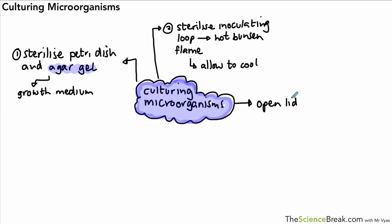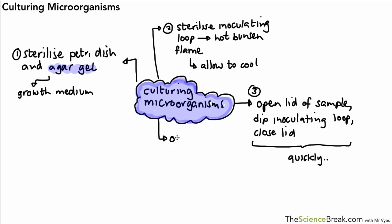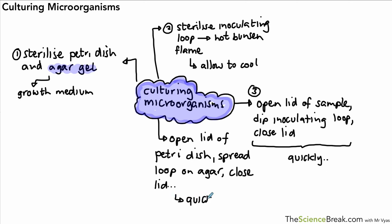Once we've done that, we open the lid of our sample bottle. That was our culture broth. We dip in the loop, the end of the loop and close the lid. That step has to be done as quickly as possible. Then we go on to the next step. We open the lid of our petri dish where we want to grow the bacteria. We open it slightly or as little as possible. We spread the loop onto the agar gel to transfer the bacteria and then we close the lid. Again, we do that as quickly as possible.